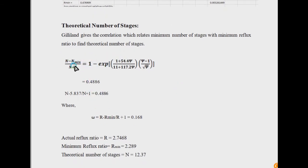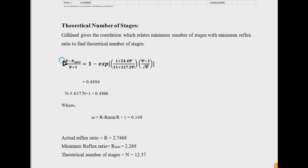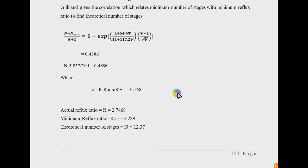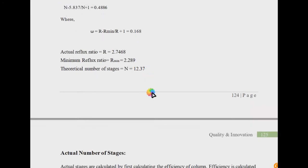In the Gilliland correlation, everything is known: N_minimum is the minimum number of stages. The parameter phi (or w) is equal to (R − R_minimum) / (R + 1). R_minimum is known, R is also known, and there is only one unknown: N, the theoretical number of stages. Using this formula, you can calculate the theoretical number of stages, which in this case comes out to be 12.37.